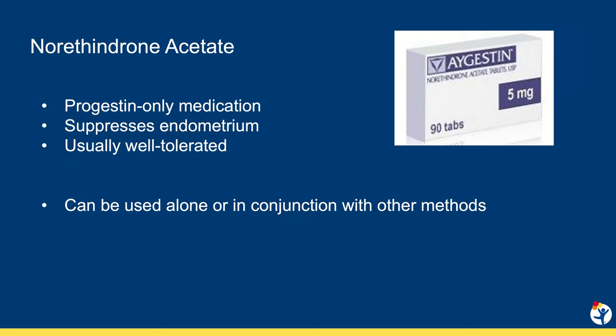Combined methods are a great choice for patients who can use them consistently each day, as late or missed doses will often result in even more bleeding. Norethindrone acetate is an oral medication that suppresses endometrial growth. Because it is progestin only, it is a safe option for most teens, even those with complex medical issues. It is given every day and can be used in extended or continuous dosing. We also use norethindrone acetate alone or in conjunction with another method in the setting of acute AUB.